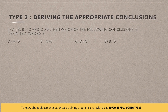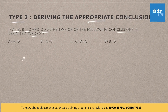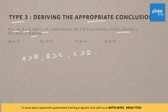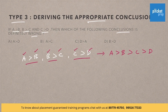Type 3: Deriving the appropriate conclusions. Here is a question. If A greater than B, B greater than C, and C greater than D, then which of the following conclusions is definitely wrong? It is given that A is greater than B, B is greater than C, and C is greater than D. From these three statements, it is clearly evident that A greater than B greater than C greater than D.